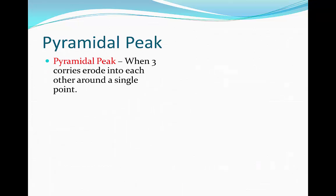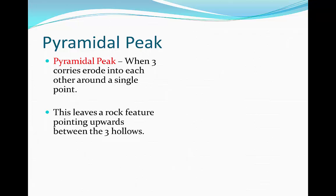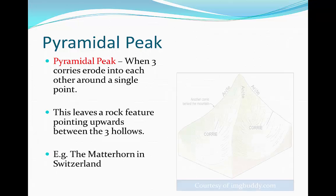Pyramidal peaks. A pyramidal peak is when three corries around a single point begin to erode into each other. This leaves a rock feature pointing up between the three. For example, the Matterhorn in Switzerland.